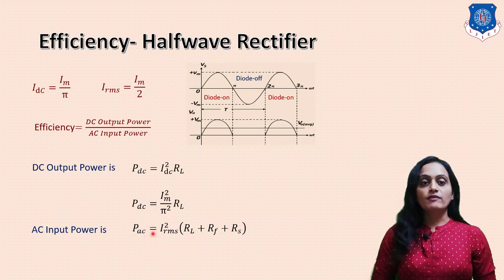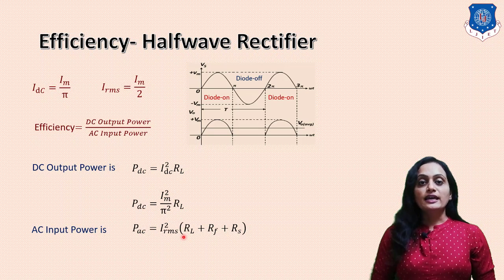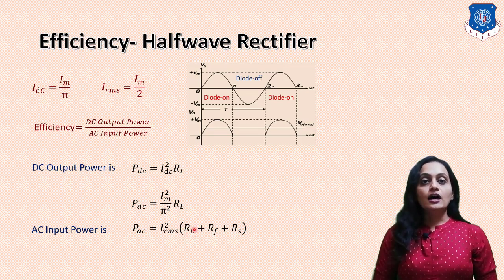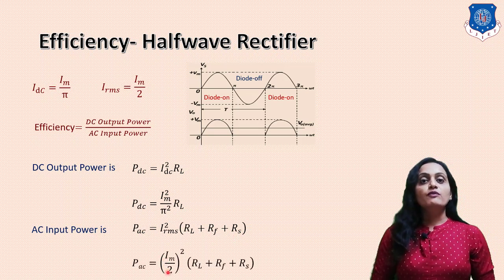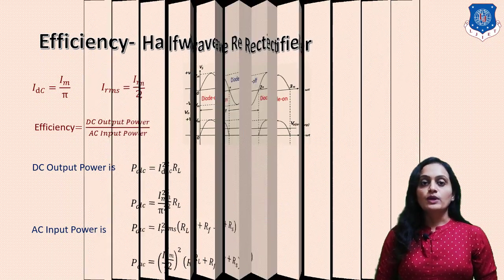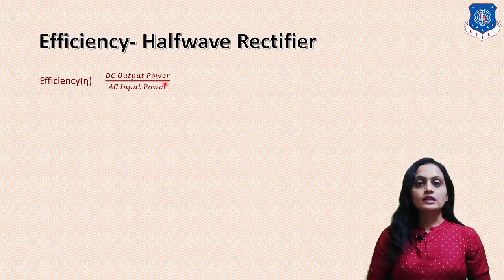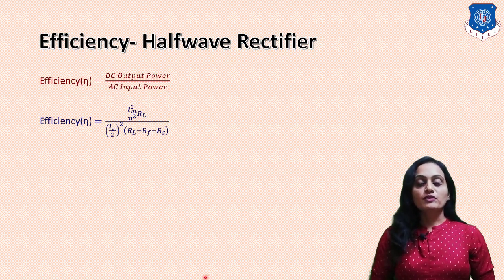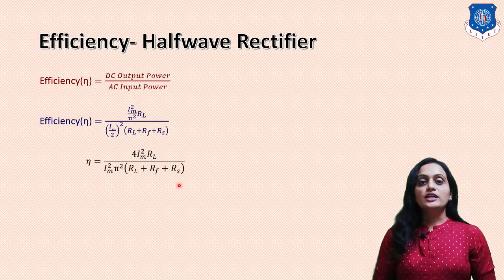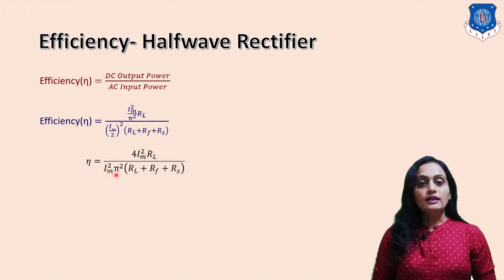AC input power is PAC = IRMS² × resistance, where resistance is the sum of RL (load resistance), RF (forward resistance of the PN junction diode), and RS (resistance of the transformer secondary). Putting the value of IRMS = IM/2 into this equation gives the next expression. Substituting the DC output power and AC input power into the efficiency equation, we get: efficiency = 4IM² × RL divided by IM² × π² × (RL + RF + RS).